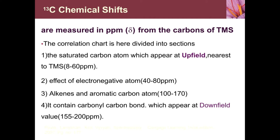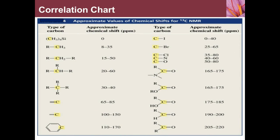If the compound contains a carbonyl group — whether aldehyde, ketone, amide, or ester — that will be more downfield, having delta values in the range of 155 to 200 ppm. The correlation chart is very important. Looking at the types of carbon, tetramethylsilane (TMS) has a delta value of 0 ppm. Alkanes, which are saturated sp3 compounds, are upfield with delta values around 2 to 35 ppm.